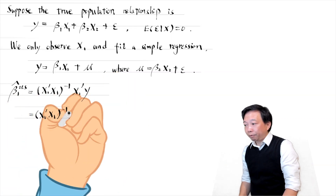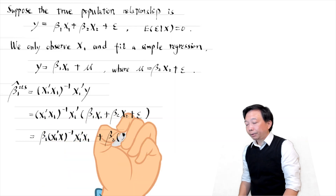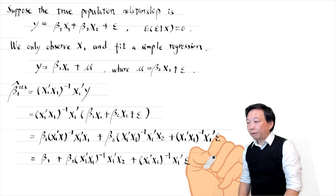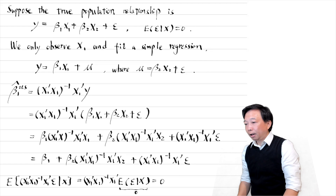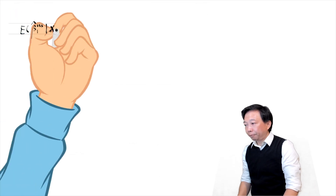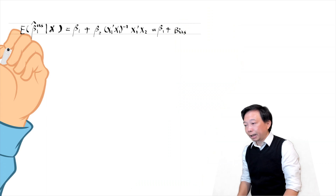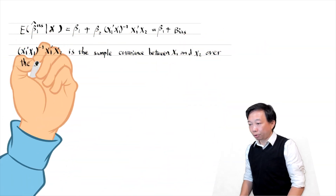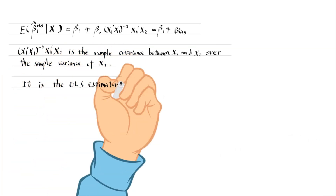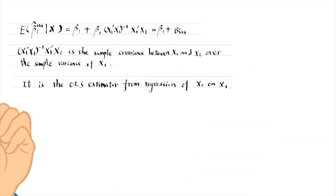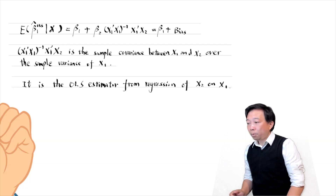Then we replace the outcome variable y with its true relationship with x1 and x2 — there are three terms. When we take the expectation of beta hat 1, we find that the last term is zero because of the zero conditional mean assumption. So we focus on the first two terms. The first term is beta 1. The second term is the omitted variable bias: it is beta 2 times an expression of x1 and x2. That expression is the sample covariance between x1 and x2 over the sample variance of x1, which is also the OLS estimator from the regression of x2 on x1. It has the same sign as the covariance between x1 and x2.